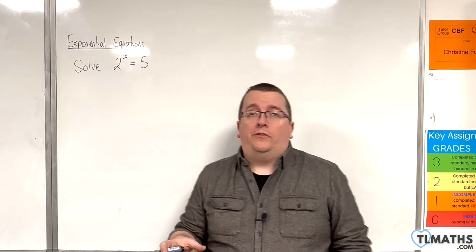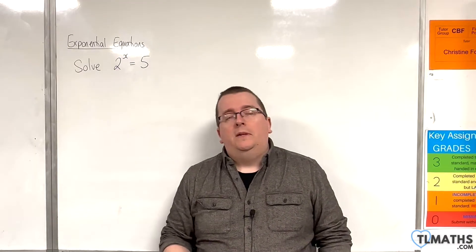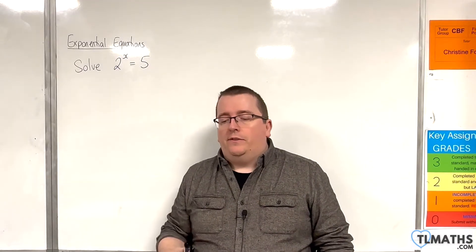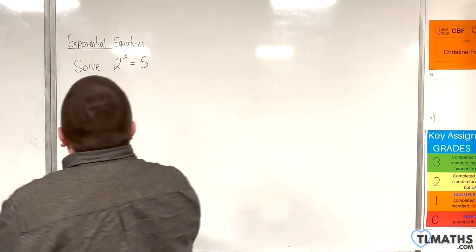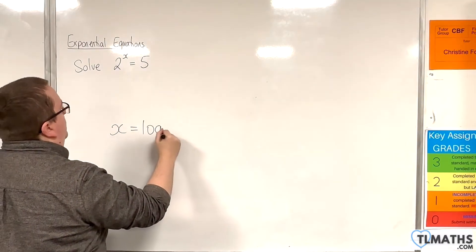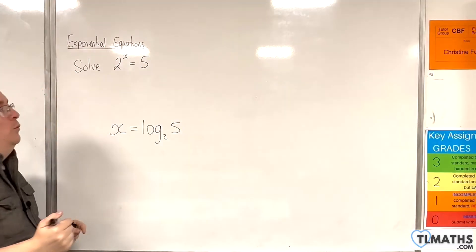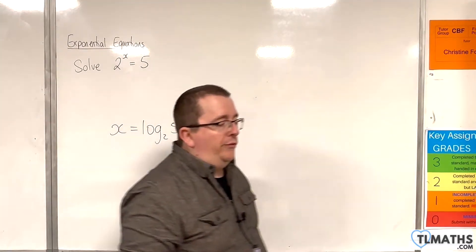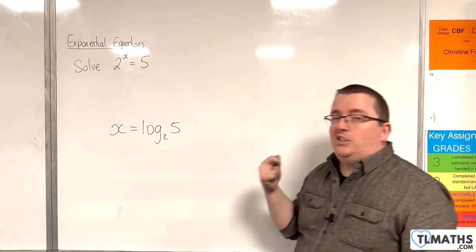In the first video of this section, we looked at solving 2 to the power of x is equal to 5. And I mentioned that in going from exponential form to the logarithmic form, which is x is log base 2 of 5, there's this intermediate step where we are logging both sides. Now, in this case, we're logging both sides with base 2.